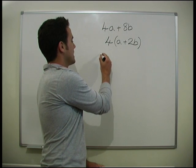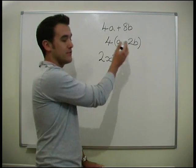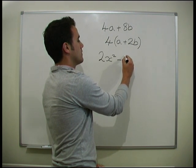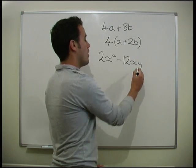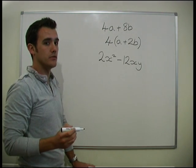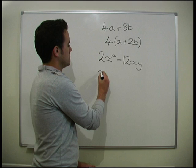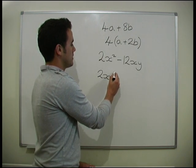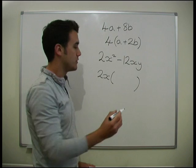So, what about if I had 2x squared minus 12xy. Well, what are the common factors here? There's more than 1. We've got 2 as a common factor to both of those. And x is also a common factor to both of those. So, we would end up putting 2x out the front. And then we'd have our bracket. And what we're doing inside is 2x times what equals 2x squared. 2x times x.